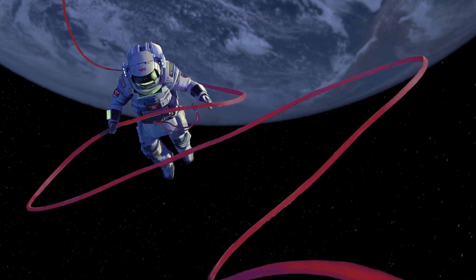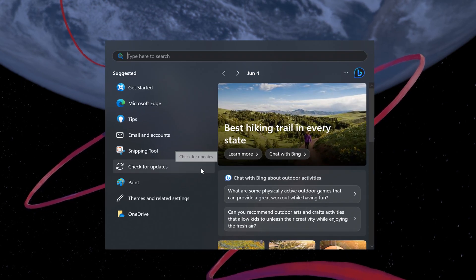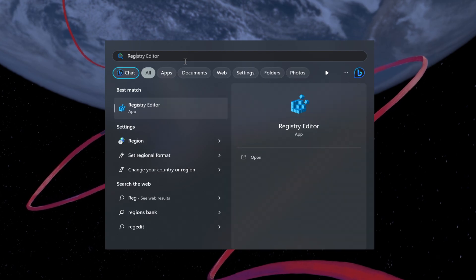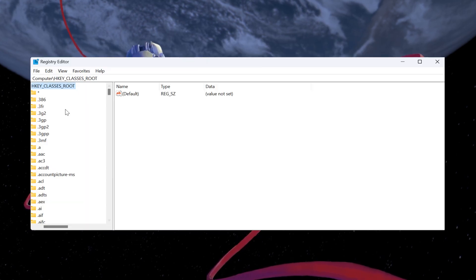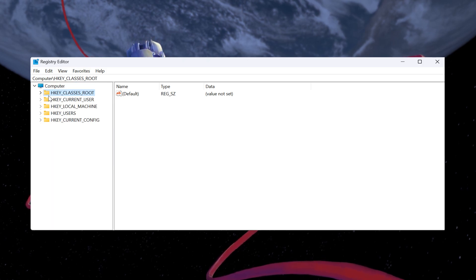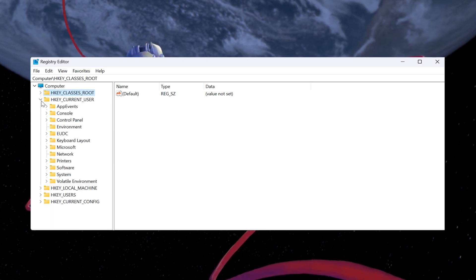For the next fix, we'll be using the Registry Editor to fix the Windows Logon Entry problem. Type REG Edit in your Start Menu Search and hit Enter to open the Registry Editor. Once in the Registry Editor, navigate to the following path as you can see on the screen.